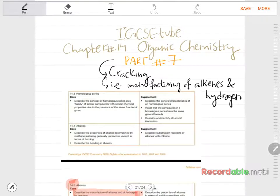Hello and welcome to IGCSE tube. This is part number 7 of chapter number 14, organic chemistry. In this video we will be talking about cracking, a reaction by which alkenes and hydrogen are manufactured.